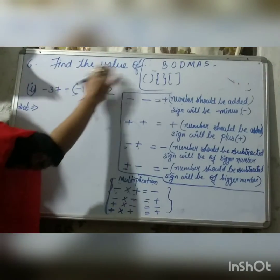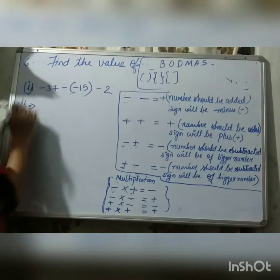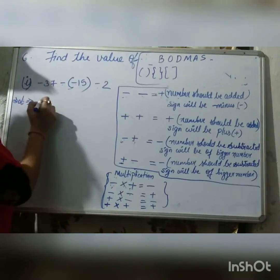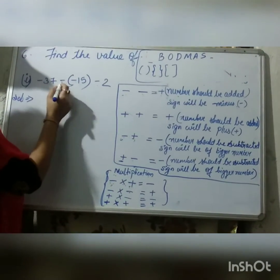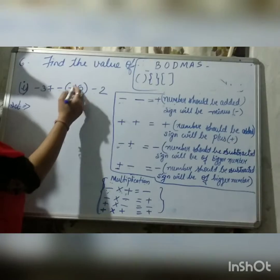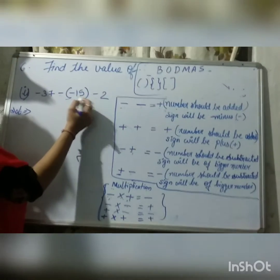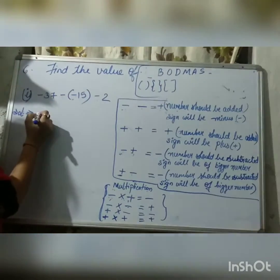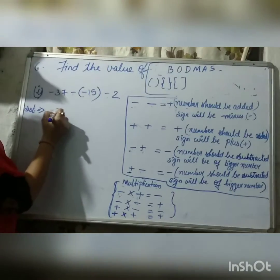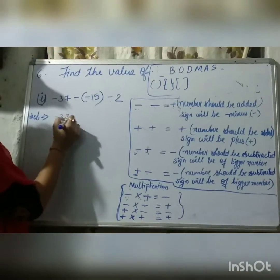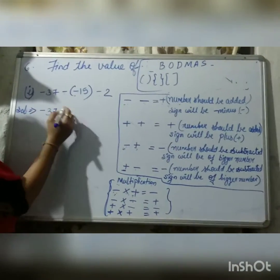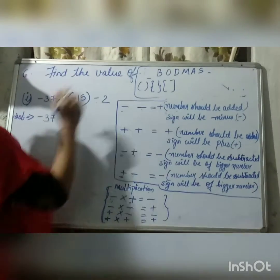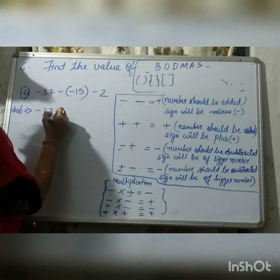On to the 6th question — find the value of. The first question is minus 37 minus, and then bracket minus 15 minus 2. Now, we'll solve the bracket first, according to BODMAS rule.